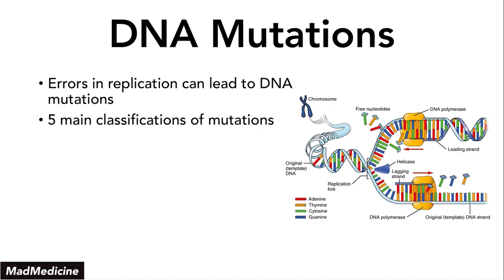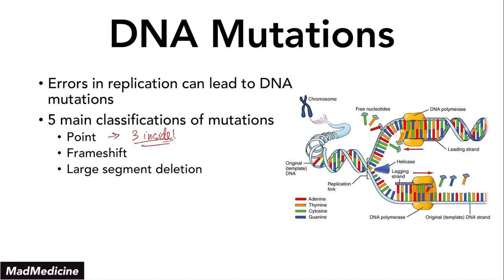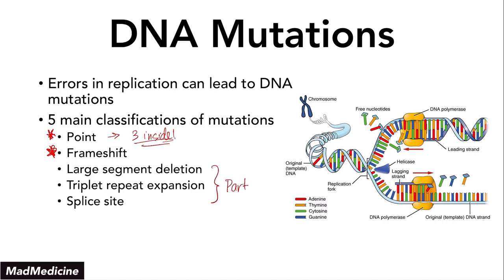There are five main classifications for mutations you need to know. The first is point mutations, which have three subclassifications within them. You also have frameshift mutations, large segment deletions, triplet repeat expansion mutations, and splice site mutations. For part one of this lecture, we're going to focus only on point mutations and frameshift mutations, as these encompass the majority of what you need to know and will be tested on. Part two will cover the remaining concepts.